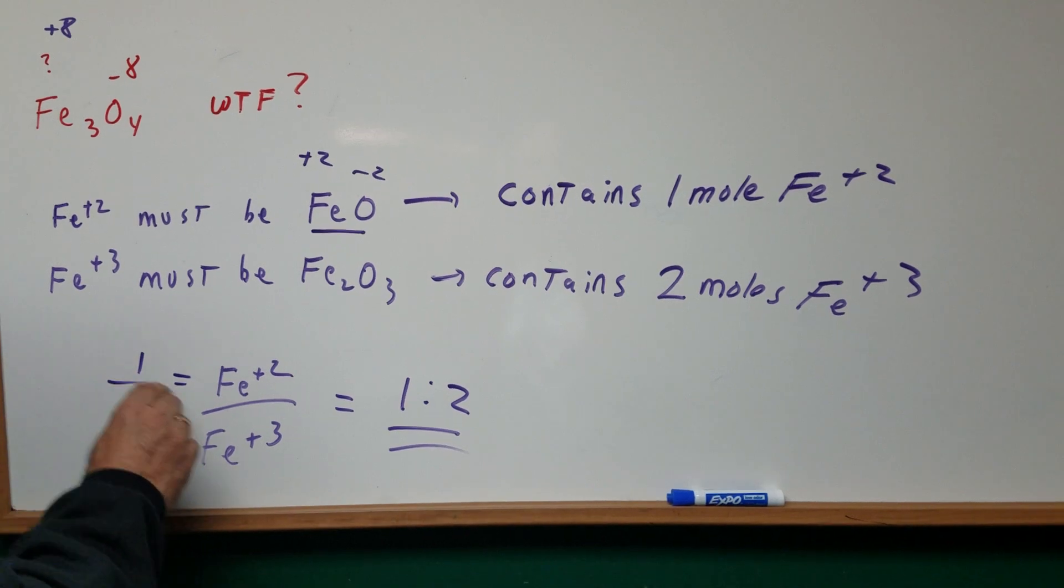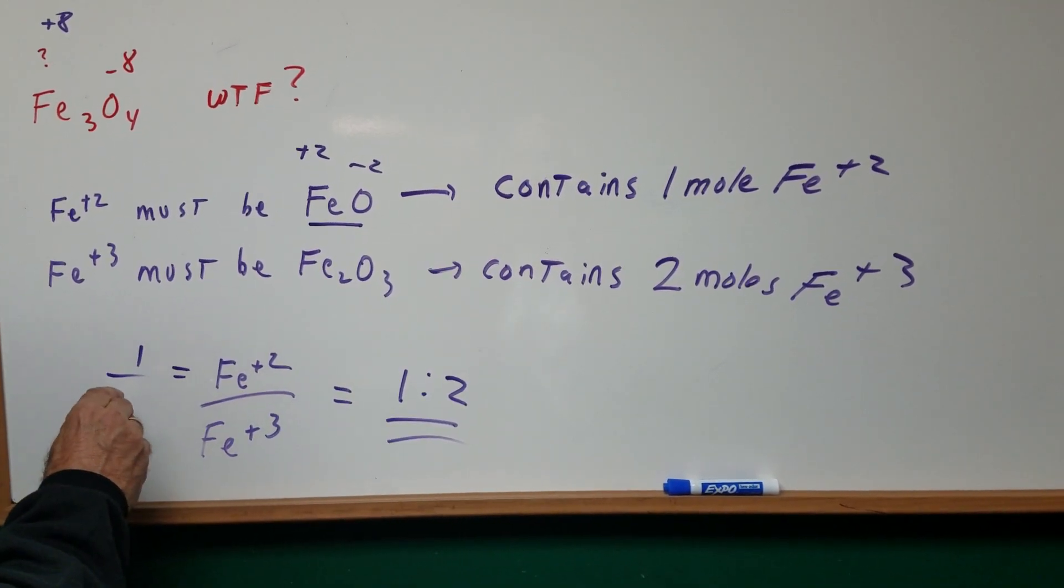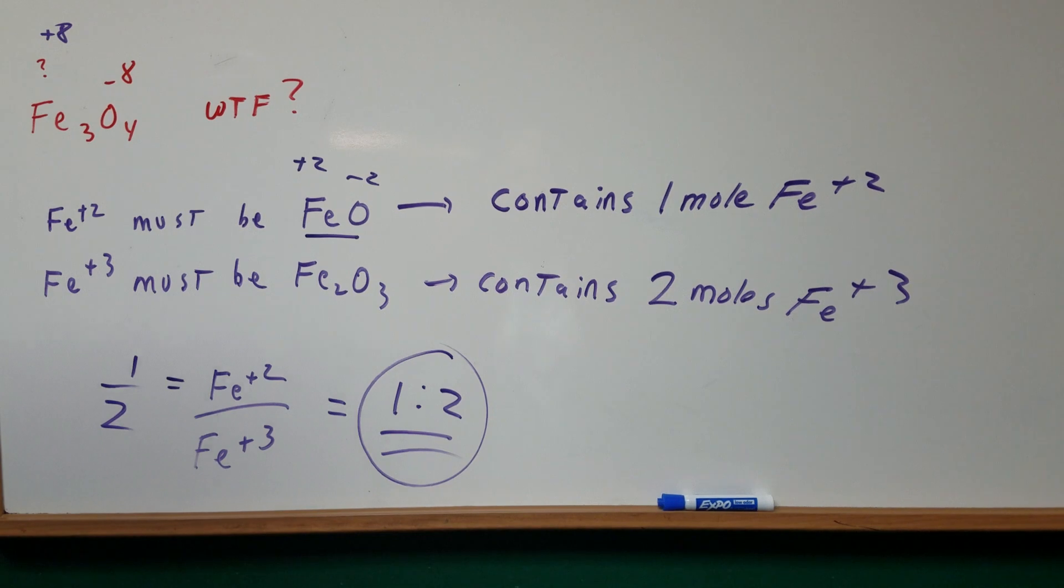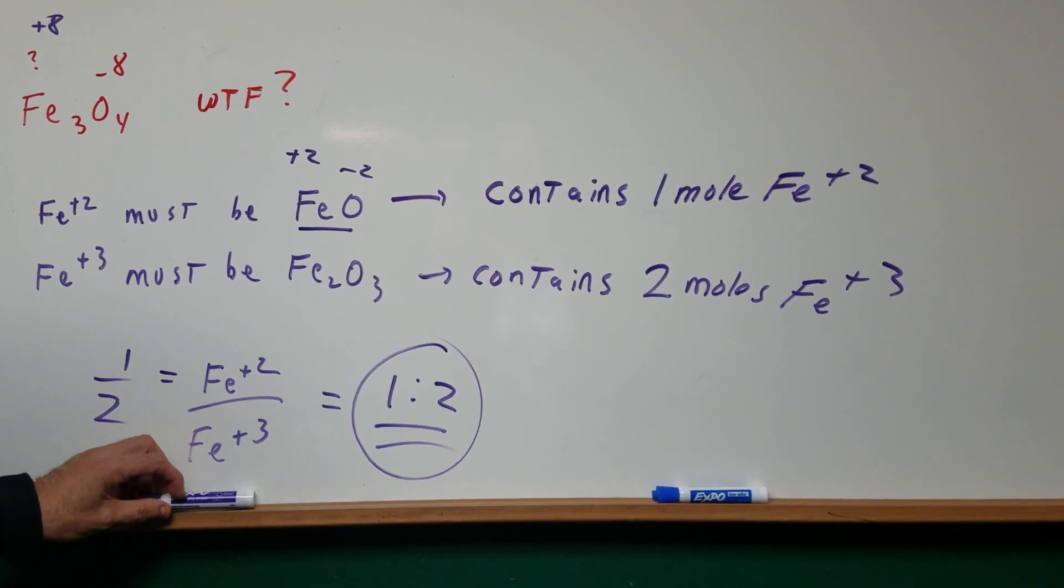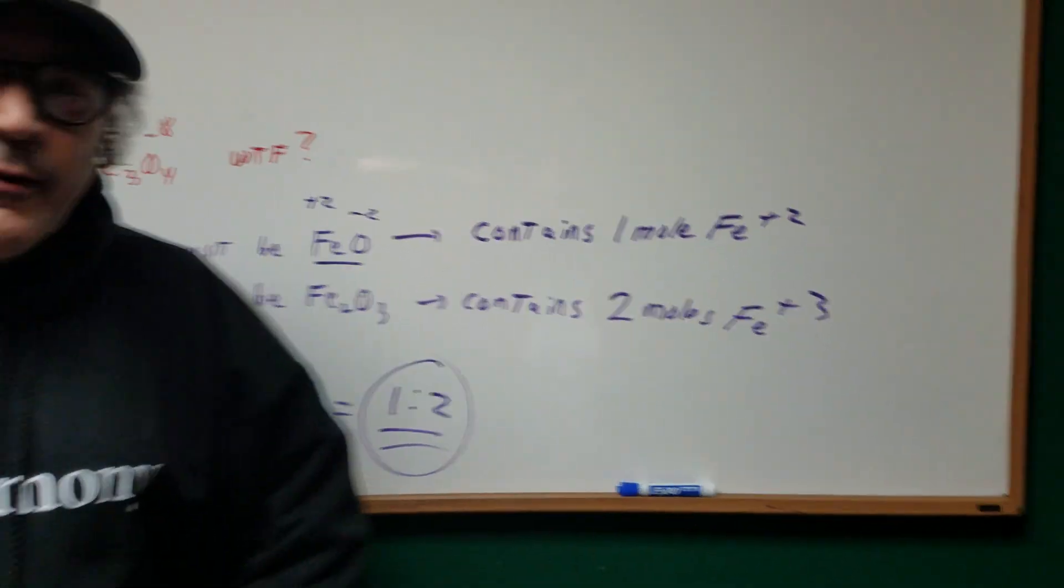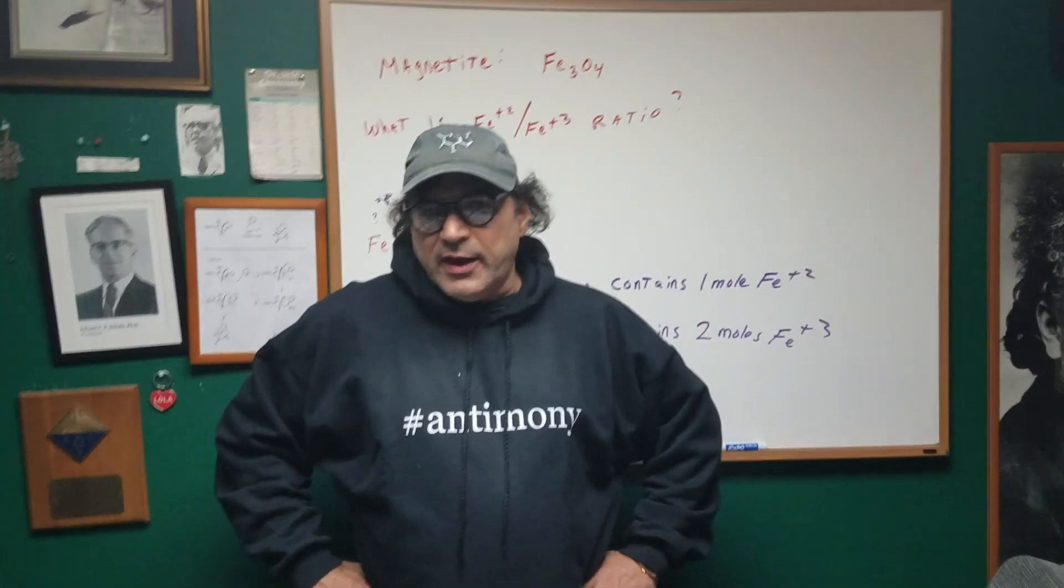So we get the ratio is one part Fe+2 and two parts Fe+3. That's a very rare type of question. If you figured that out, since that's not really in any of the textbooks, you are good.